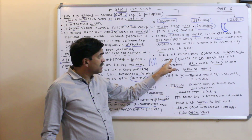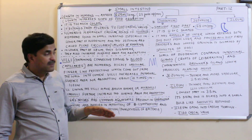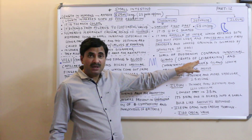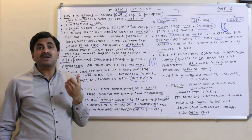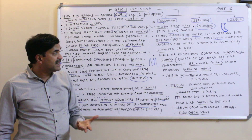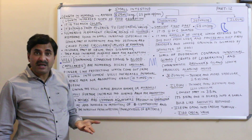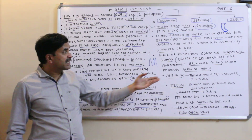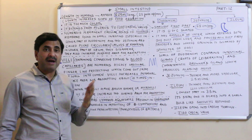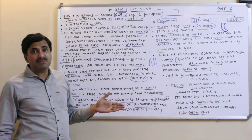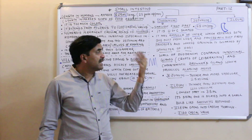The wall of the duodenum contains intestinal glands also called the crypts of Lieberkühn, which release intestinal juice also called succus entericus. The wall of the duodenum also contains characteristic Brunner's glands — it is often asked where Brunner's glands are present. These Brunner's glands produce alkaline mucus.